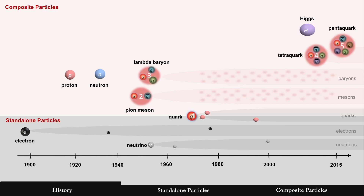Grouping these a bit more: standalone particles, the lepton family — neutrinos and electrons — and quarks, which are debatable as standalone. The line is drawn halfway on whether the quark is standalone. We have five categories: lepton, quark, meson/baryon, tetraquark, and pentaquark. The Higgs, tetraquark, and pentaquark have been discovered more recently in the last decade as particle accelerators reached much higher energies.